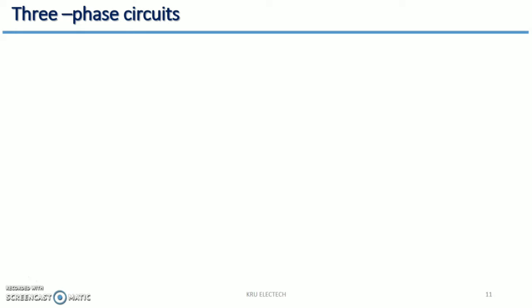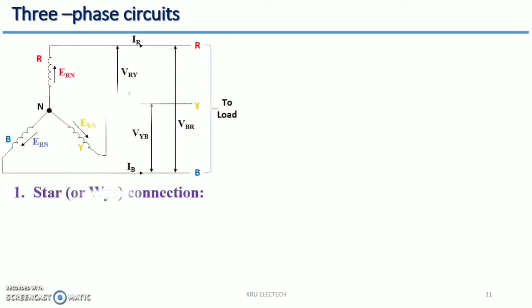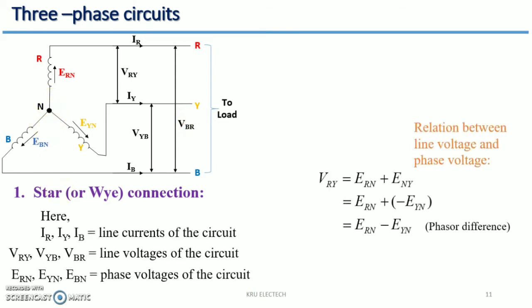It starts with the three-phase star connection. Here the three-phase star connection is shown, having the line currents IR, IY, and IB, and phase voltages ERN, EYN, and EBN. The line voltages are VRY, VYB, and VBR. This is the neutral point, so VRY is equal to ERN plus ENY — the addition of these two.